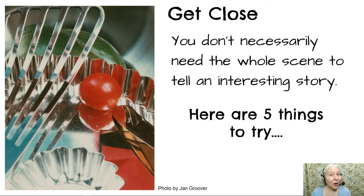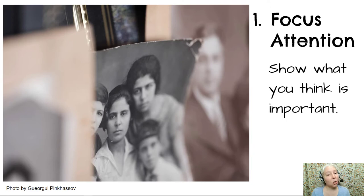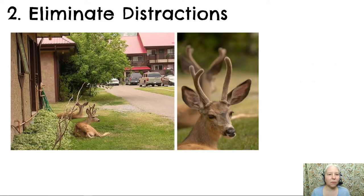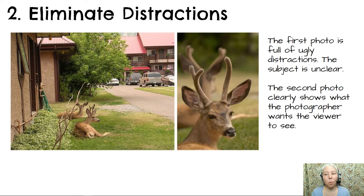Here are five things to try when taking your Get Close photos. Number one, focus attention. This looks like a series of photos, but the artist wants to focus on the center photo, so everything else is out of focus — show what you think is important in your photo. Number two, eliminate distractions. The first photo is full of ugly distractions and the subject is unclear. The second photo clearly shows what the photographer wants the viewer to see: a deer turning around looking at us, almost making eye contact, with another deer softly out of focus in the background surrounded by nice green colors — a much more successful composition.